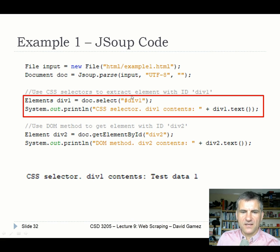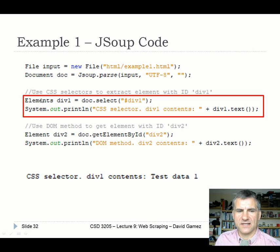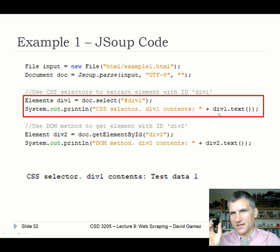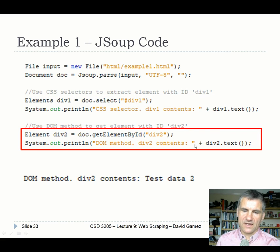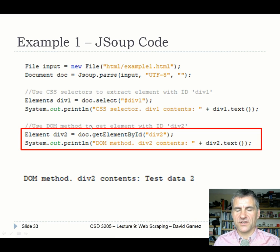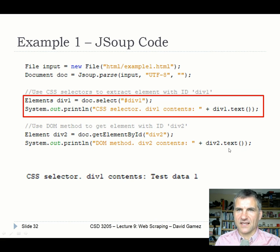If we did 'div1.html()' it returns the HTML inside that particular div. But 'div1.text()' makes more sense here, giving us 'test data one'. To get div two, we can use a different selection statement - JSoup also supports 'document.getElementById("div2")' - but generally the CSS selector approach is a lot better. In the second example we've got different classes. Remember, an ID is usually only applied to a single element on the page, making it very precise. Commercial websites don't really use IDs that much - they tend to use classes.